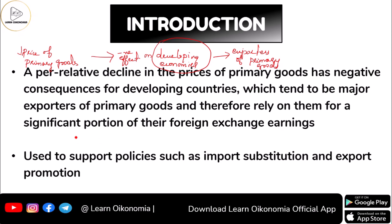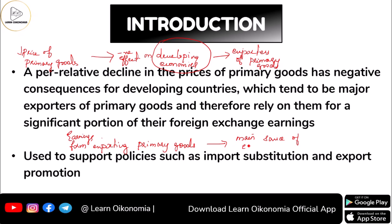Developing economies rely hugely on primary goods. They export these goods and receive foreign exchange earnings. These earnings from exporting primary goods are one of the main sources of income for least developed countries, or LDCs.